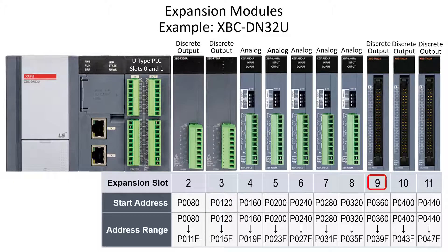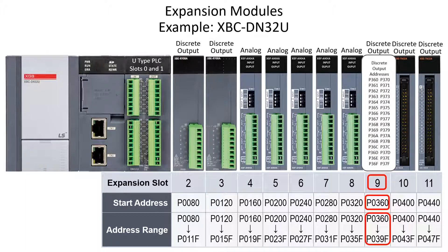A 32-point digital output module is configured in slot 9. The starting address is P word 36 bit 0 and the range is P 36 0 through P 39 F. The 32 output points are addressed P 36 0 through P 37 F. Though every expansion module slot is allocated 64 bits, the physical addresses in each slot are dependent on the I/O count of the discrete module.